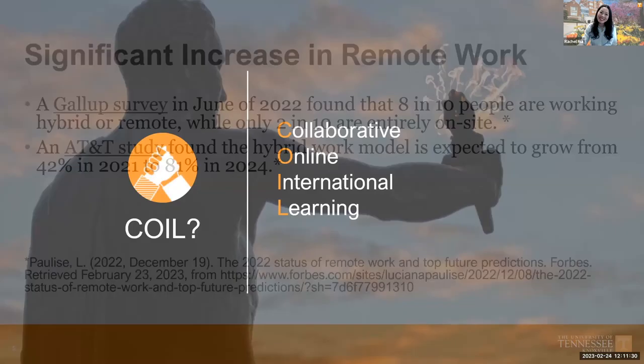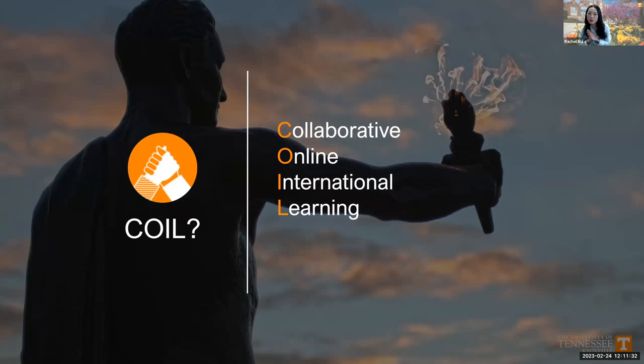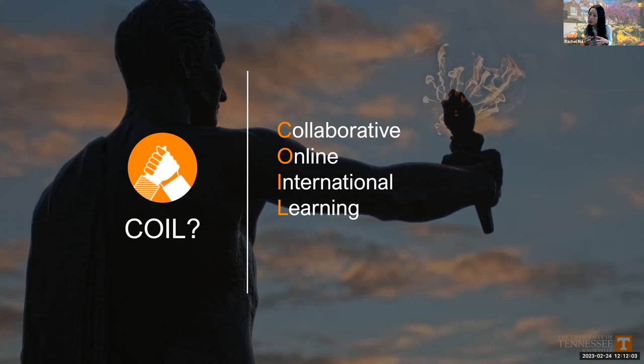COIL stands for Collaborative Online International Learning. The term combines four essential dimensions of real virtual mobility: it is a collaborative exercise of teachers and students; it makes use of online technology and interaction; it has the potential for an international dimension — I say potential, because sometimes the 'I' in COIL also stands for intercultural. So it doesn't always have to happen across borders; it could happen within the United States between universities and colleges. And the learning aspect is integrated into the learning process.